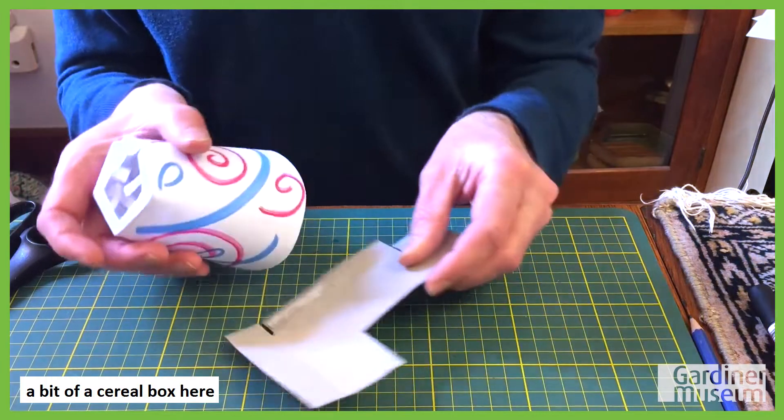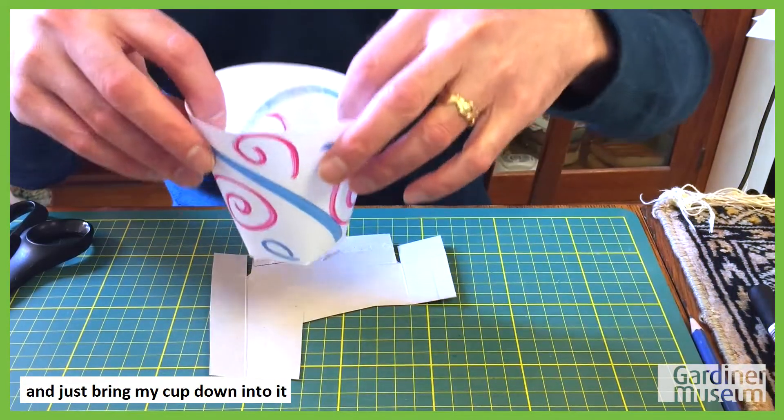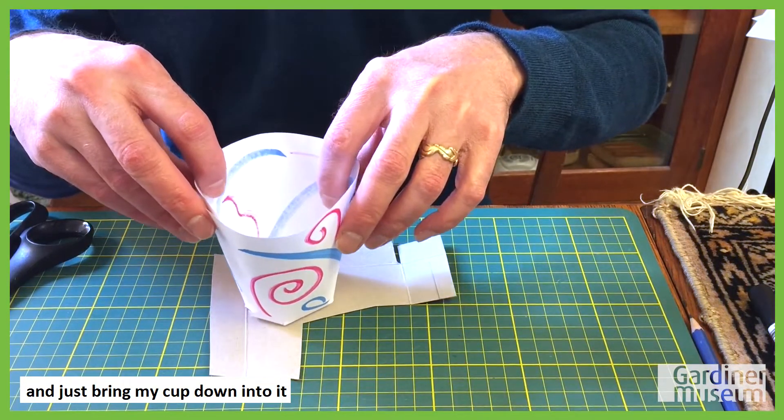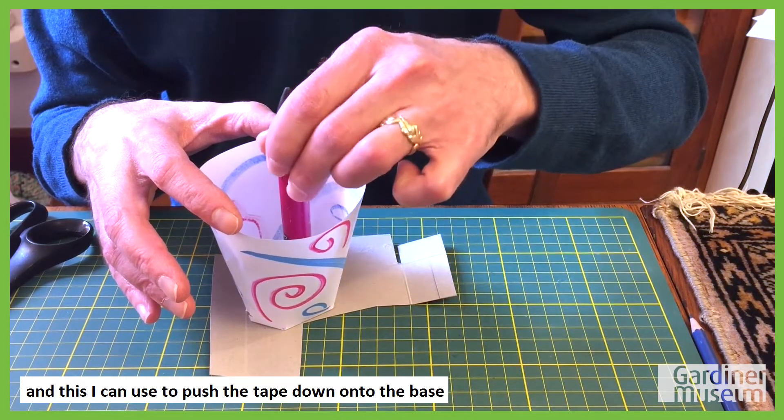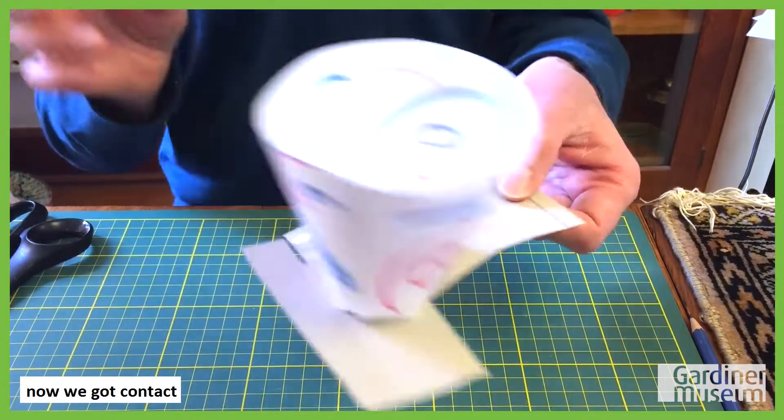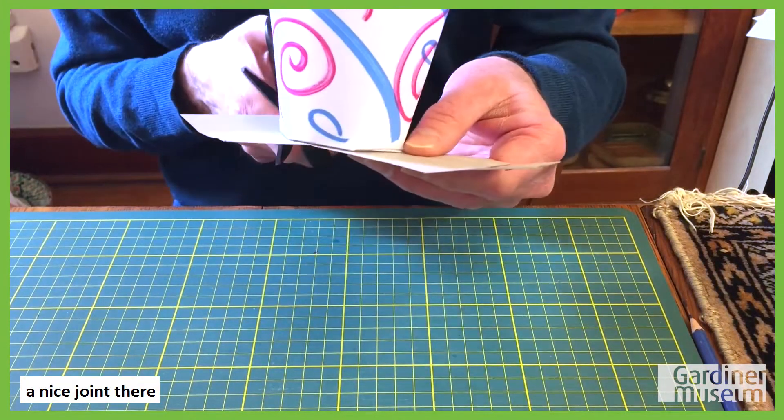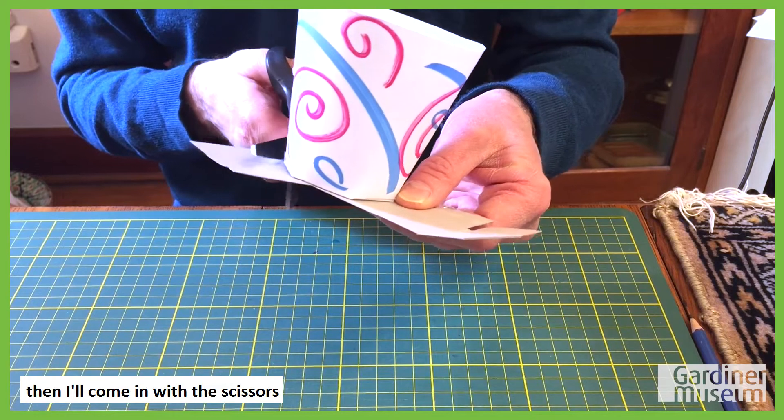So we'll get the tape in there. A bit of a cereal box here. And just bring my cup down into it, and this I can use to push the tape down onto the base. Now we've got contact, nice joint there. Then I'll come in with the scissors.